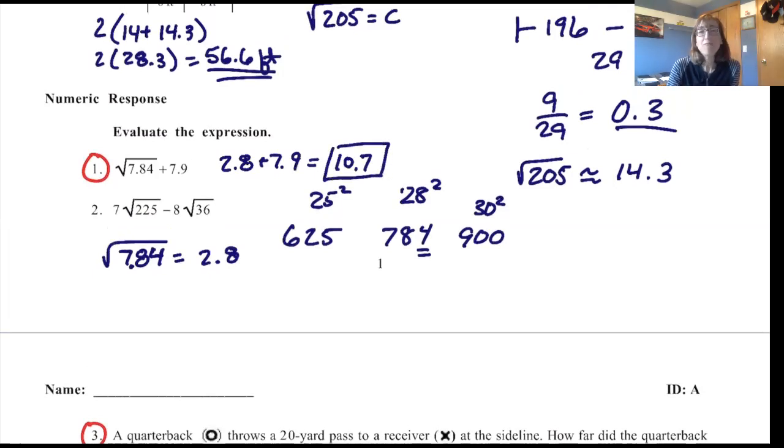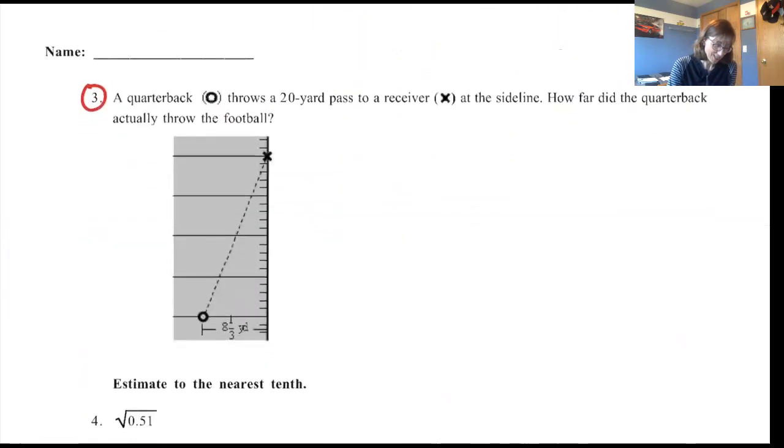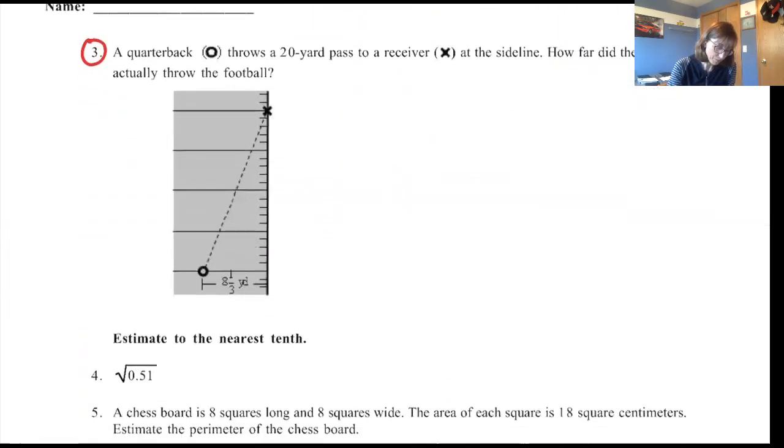And then we just have one more question, and it is about this quarterback who's throwing a 20-yard pass to a receiver. Now the actual pass that the football player threw is this distance right here. But he's getting credit for this nice vertical distance that he threw, and that is 20 yards. And so this distance right here is 8⅓ according to the diagram. So we need to find this length of this horizontal line.